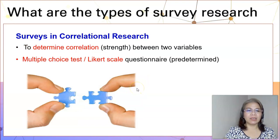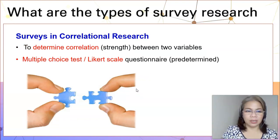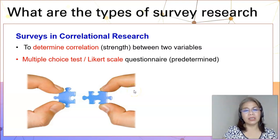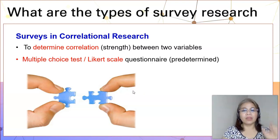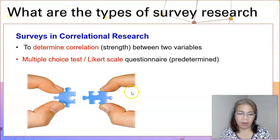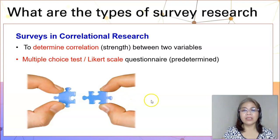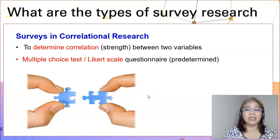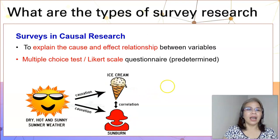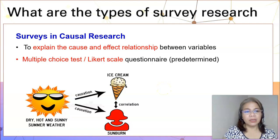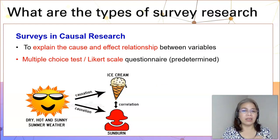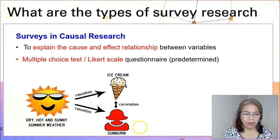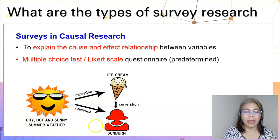Another type of survey research is correlational research. The purpose of correlational research is to determine the strength of the relationship between two variables. It uses a multiple choice test, usually predetermined, and the questionnaire is measured using Likert scale. Another type of survey research is causal research. The purpose of causal research is to explain the cause and effect relationship between variables. It also uses a predetermined multiple choice test measured with a Likert scale.